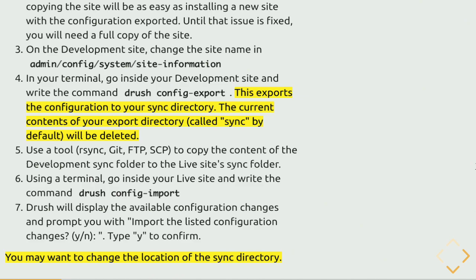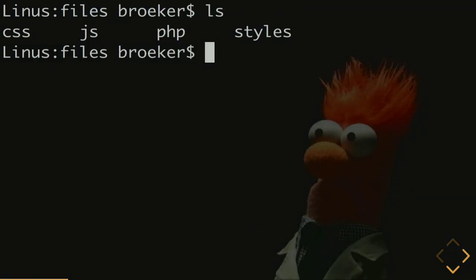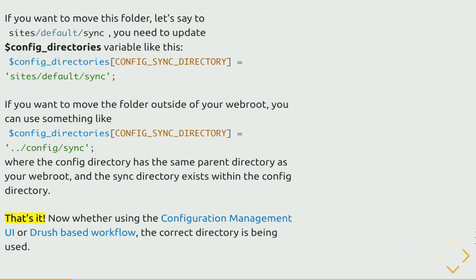Changing the location of the sync folder: by default Drupal places it in sites/default with a hashtag — so sites/default/files/config/hash. I go to find this folder — it's not there. I'm immediately thinking something has gone horribly wrong with my install. Reading more, I realize I have to actually create this directory, make a change in my settings file, and that's it. And I actually did this — it was honestly my first taste of victory with configuration management. I have a sync folder. Perfect.